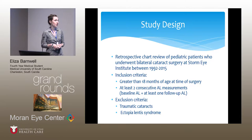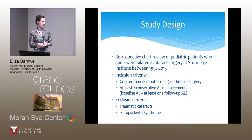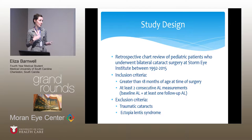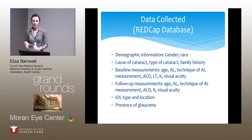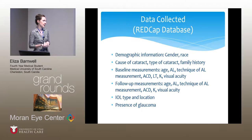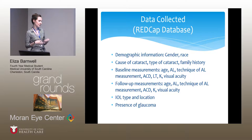This was a retrospective chart review of pediatric patients who underwent bilateral cataract surgery at the Storm Eye Institute. We included children who had surgery at greater than 18 months of age with at least two consecutive axial length measurements — one baseline AL at surgery and at least one follow-up axial length. Exclusion criteria were traumatic cataracts and Ectopia Lentis syndrome. Data was collected in a REDCap database, including demographic information of gender and race, cause and type of cataract, family history, baseline measurements of age, axial length, technique of AL measurement, ACD, lens thickness, keratometry and visual acuity, and follow-up measurements of age, AL, ACD, and visual acuity.